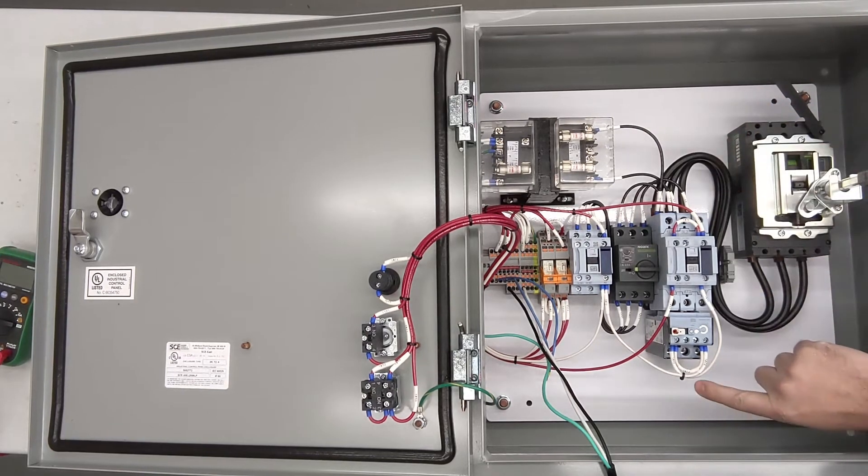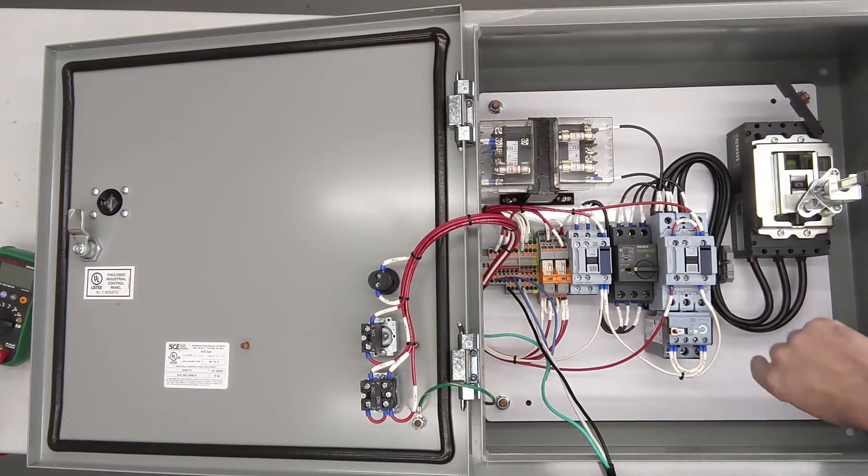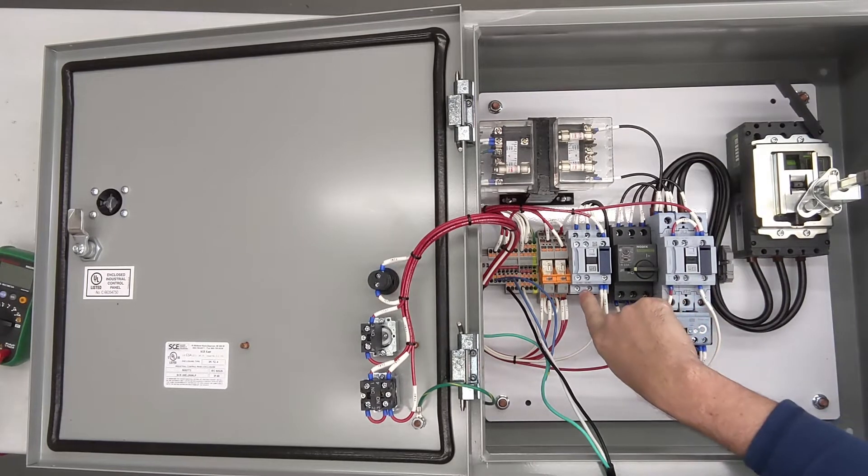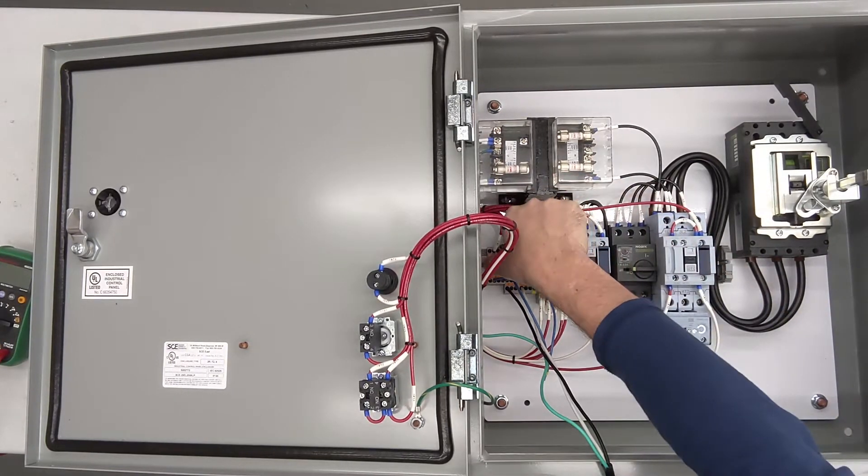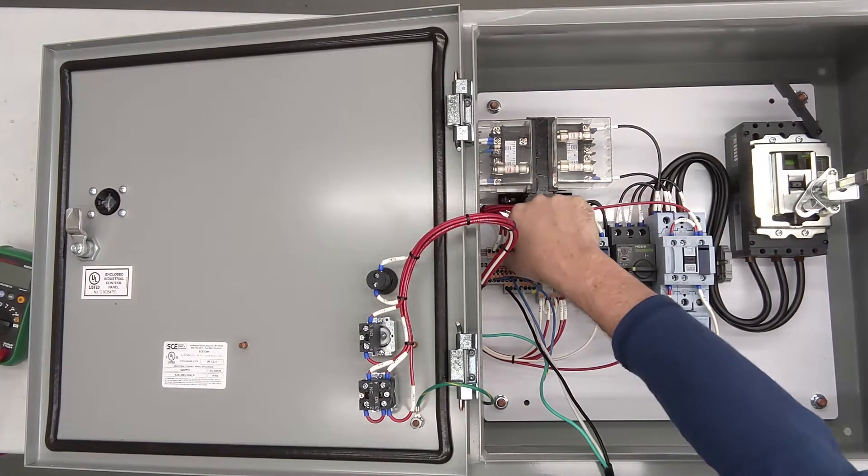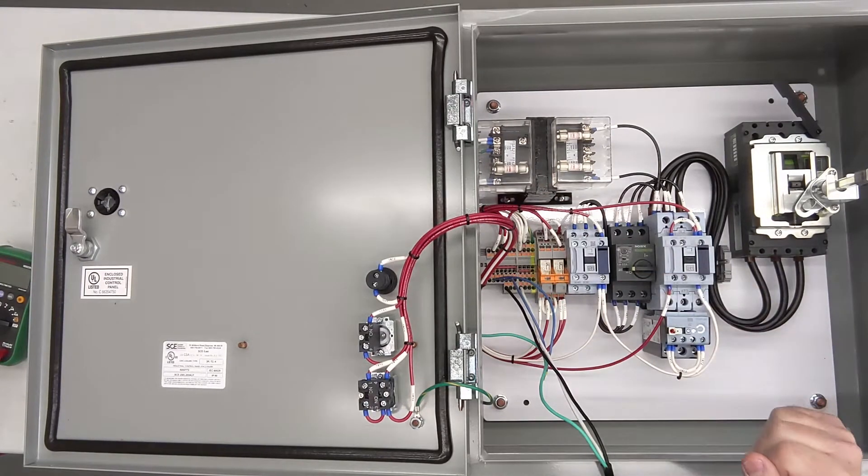This 480 volt powered panel has connections for your 50 horsepower motor here and your half horsepower motor here. You have four terminal blocks for your dry contacts. Terminal one and two are for the low.